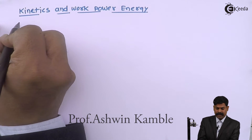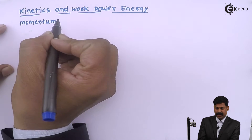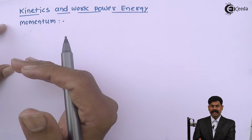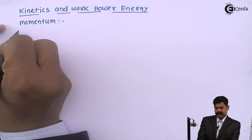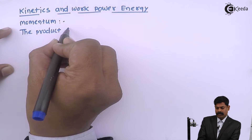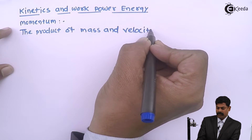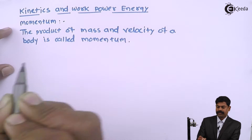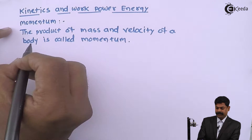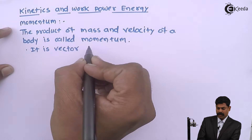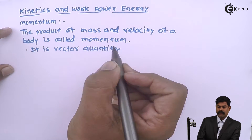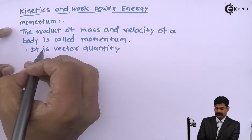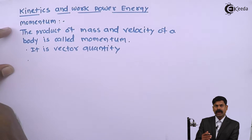The first definition is momentum. So what is momentum? The product of mass and velocity of the body is called momentum. Momentum is a vector quantity. We know that a vector quantity has magnitude as well as direction. In vector form, we'll write down the equation for momentum.